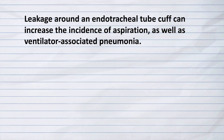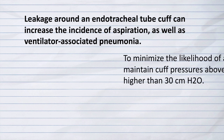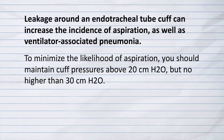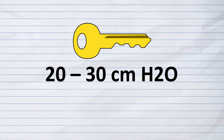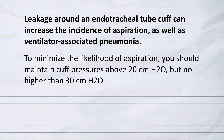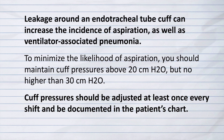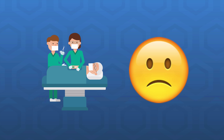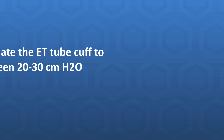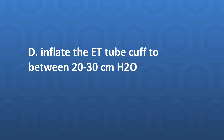Leakage around an endotracheal tube cuff can increase the incidence of aspiration as well as ventilator-associated pneumonia. To minimize the likelihood of aspiration, you should maintain cuff pressures above 20 cmH2O but no higher than 30 cmH2O. The key to getting this one correct is knowing that normal range for cuff pressures is always 20 to 30 cmH2O. Cuff pressure should be adjusted at least once every shift and documented in the patient's chart. For this patient with a cuff pressure of 15 cmH2O, the correct answer is D — inflate the ET tube cuff to between 20 to 30 cmH2O.